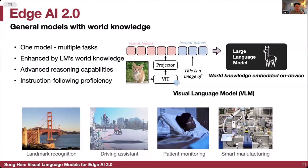We also want instruction-following proficiency — no matter if it is landmark recognition, driving, patient monitoring, or smart manufacturing. We'll see several demos where we use a single visual language model, the VILA visual language model, that can handle all these cases on a Jetson Orin.